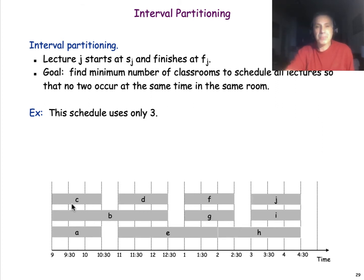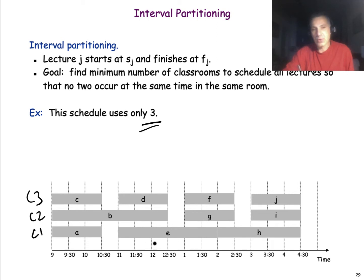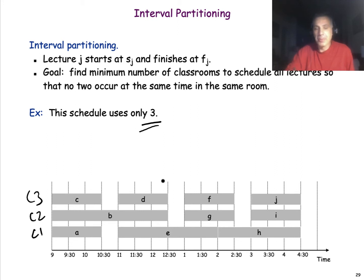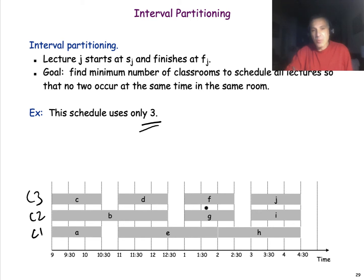Here is a better way to assign the lectures to classrooms. In this case, only three classrooms — C1, C2, C3 — are needed for the same 10 lectures. The first question is whether 3 is the minimum feasible number, i.e., is 3 the optimal number? The second question is whether there is an algorithm that assigns lectures to classrooms in this optimal manner.